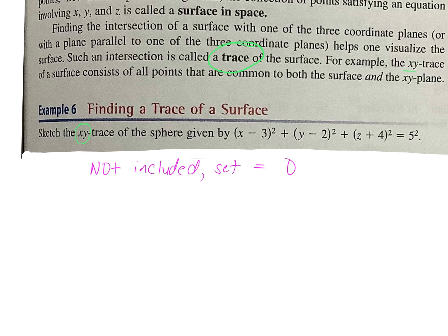They want the trace of XY. What is not included in that? Z. Whatever is not included, you set equal to zero. Not included, set equal to zero. If they ask for the YZ trace, what would you set equal to zero? X. If they say for the XZ trace, what would you set equal to zero? Y. So watch what I mean by that.